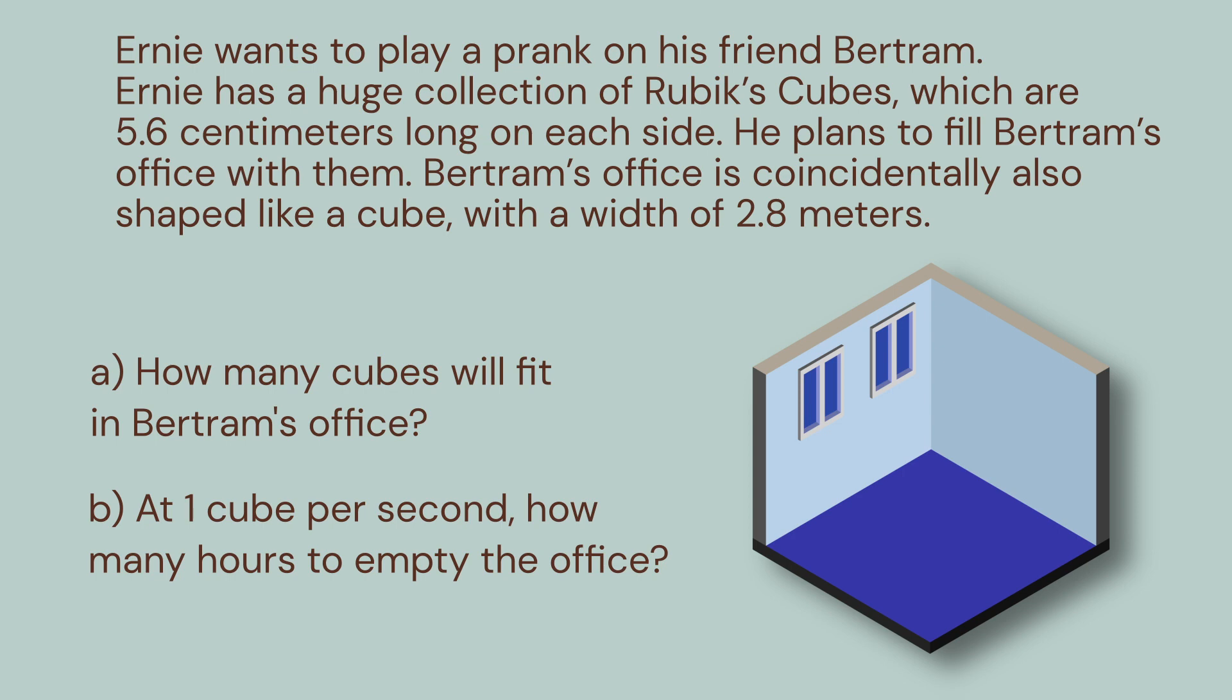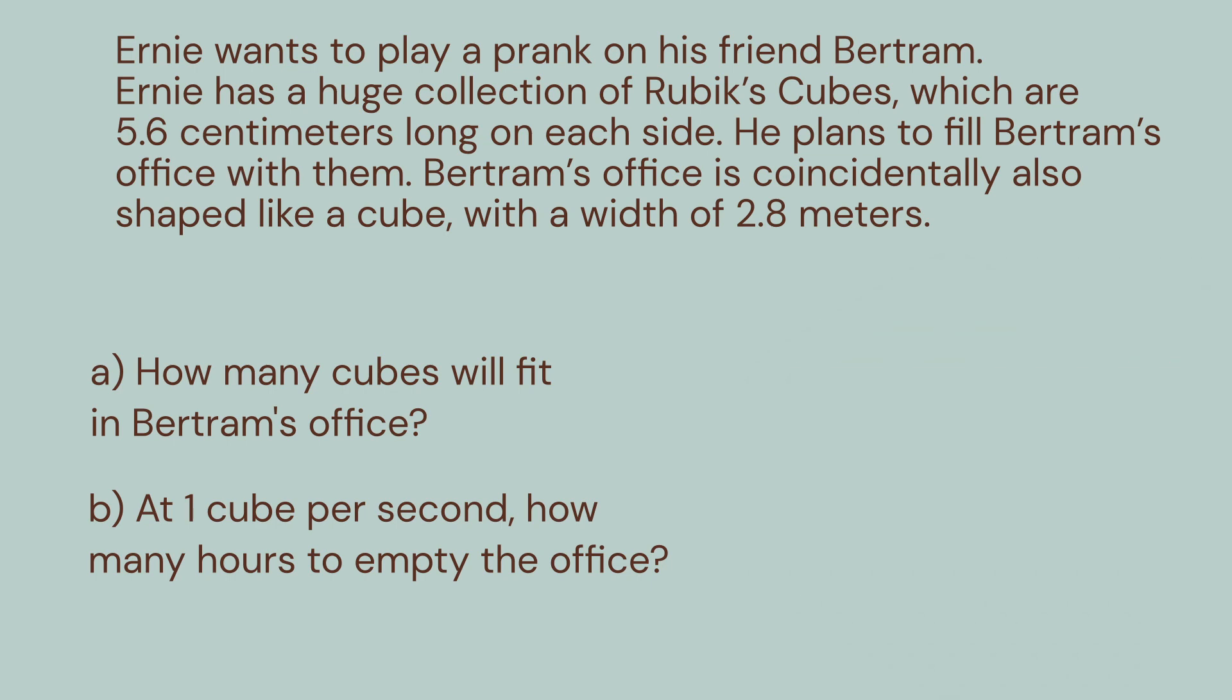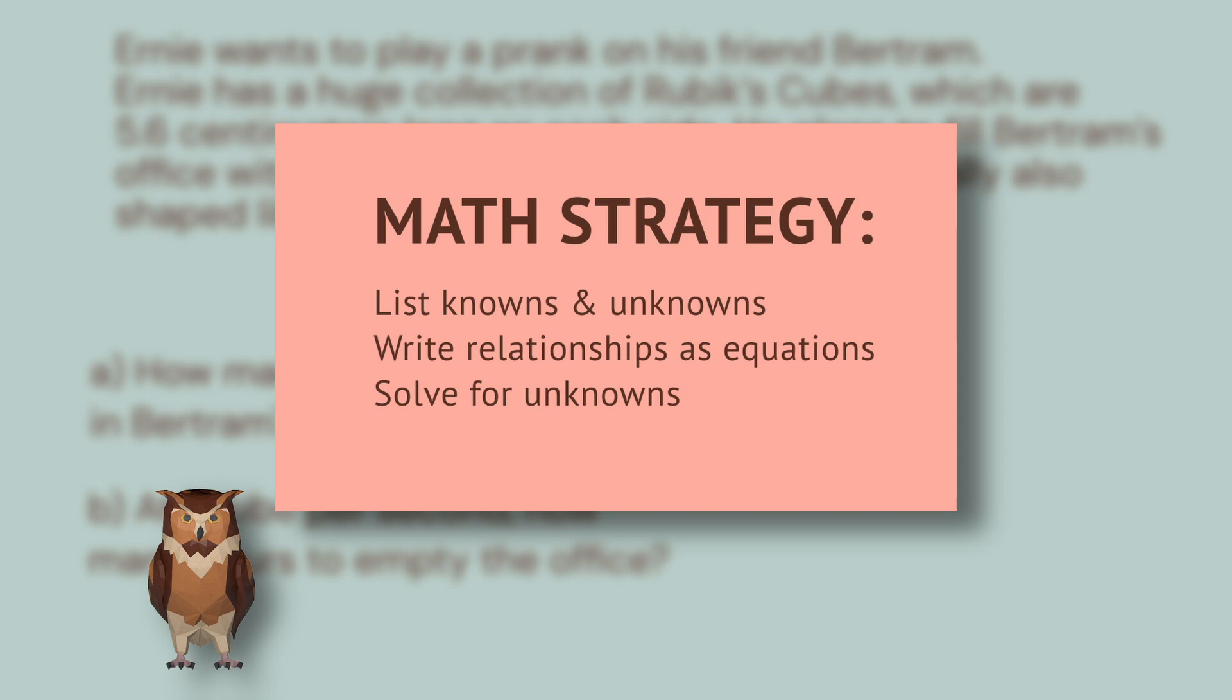This puzzle has problems inside problems. Here's our general strategy for solving word problems. We'll make a list of our knowns and unknowns, and translate the sentences from the problem into math language, so we can find the relationships between the knowns and unknowns. We write out those relationships as equations. Then we can find the unknowns by solving the equations.